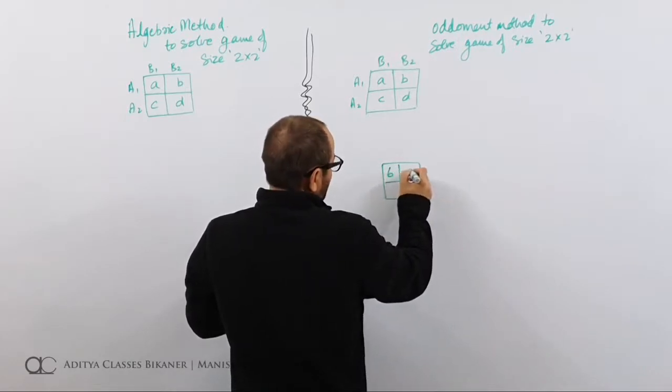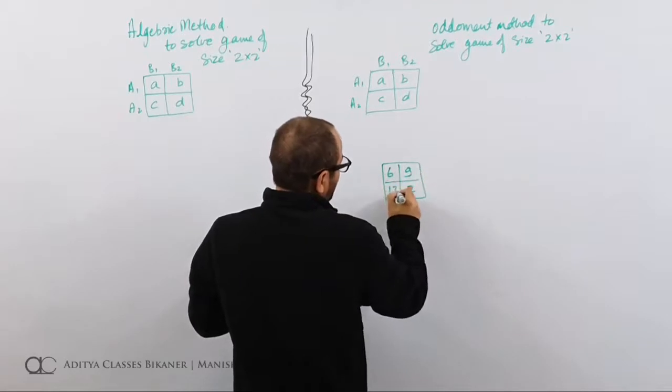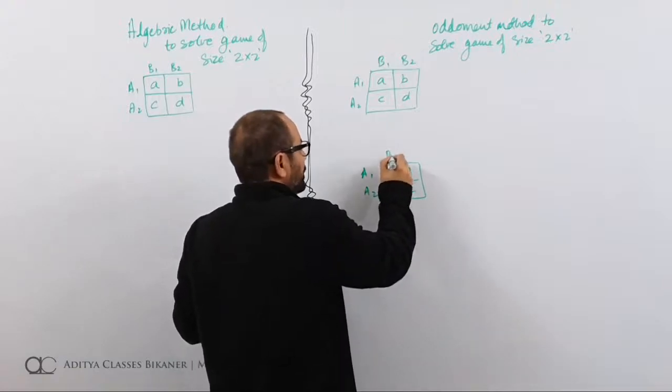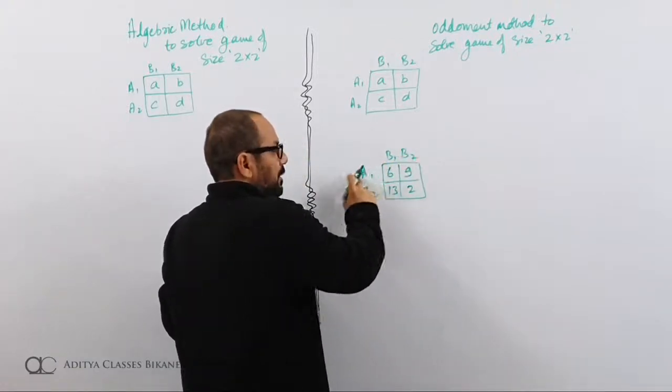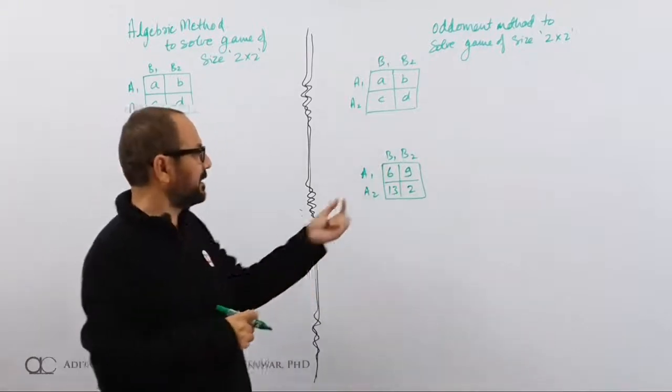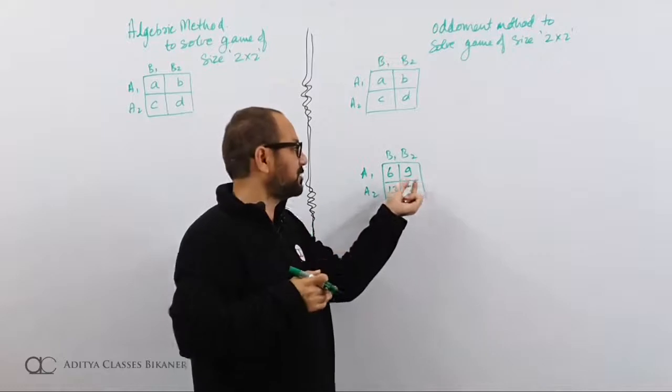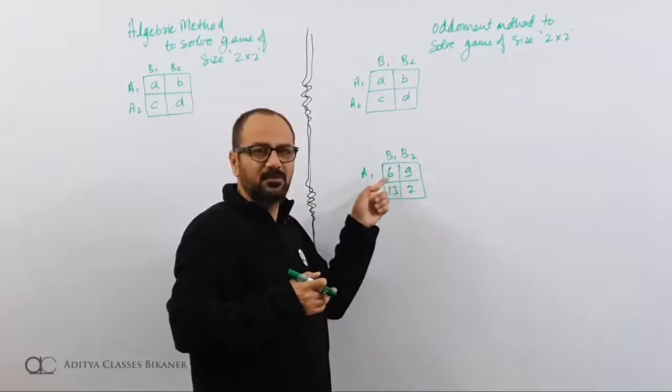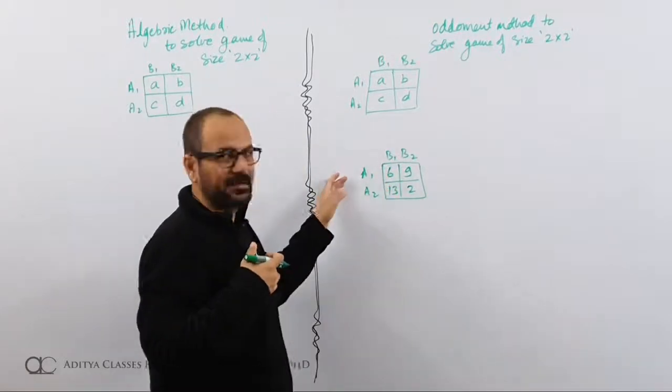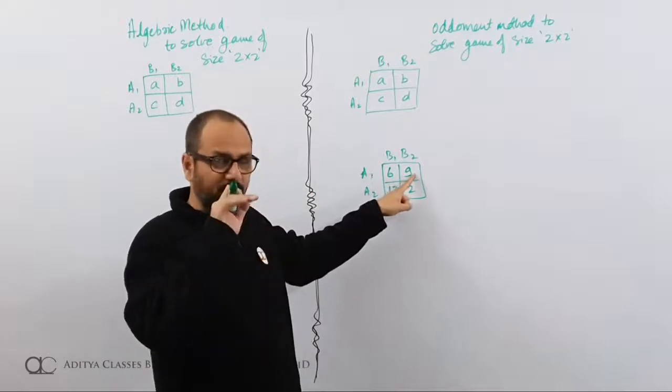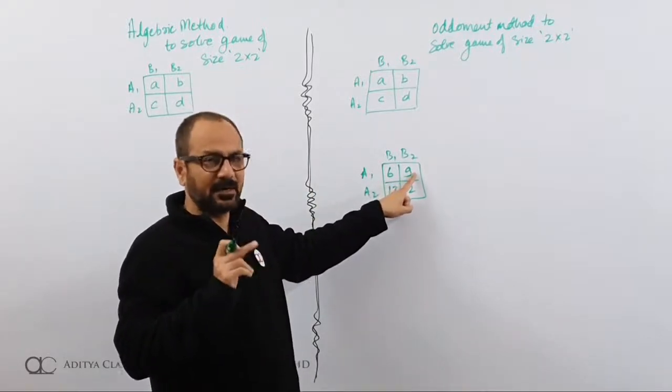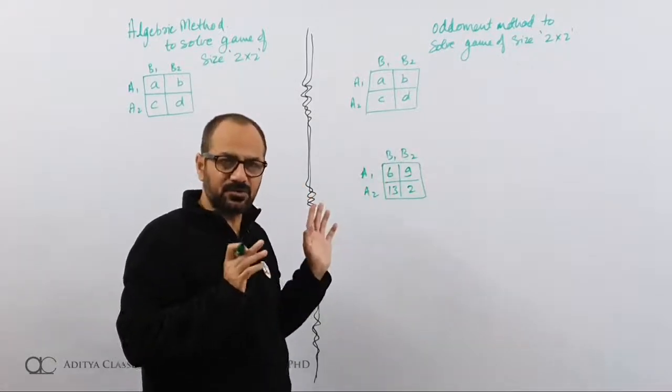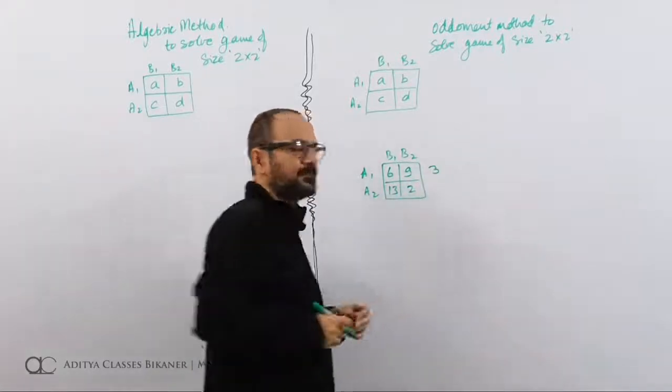We have A1, A2, B1 and B2. Now let us understand these two. Let me make an example and try to understand what is happening in oddment method. What am I doing exactly in oddment method? Let us say this is 2, 6, 9 and 13. Now we have strategies A1 and A2, B1 and B2. Now if A selects A1, then best he can get is 9, and if something goes wrong, if he is not able to select this strategy, if B switches from B2 to B1, what will be the loss? From 9, I will be down to 6. What is my loss in this case? 3 units.